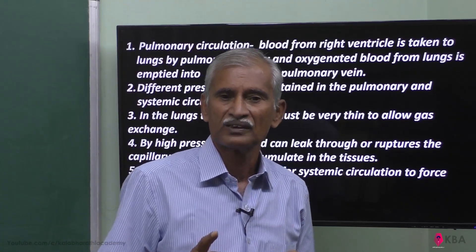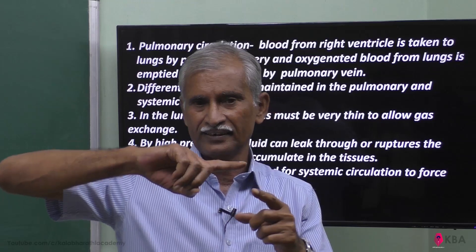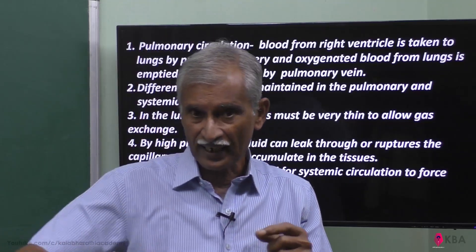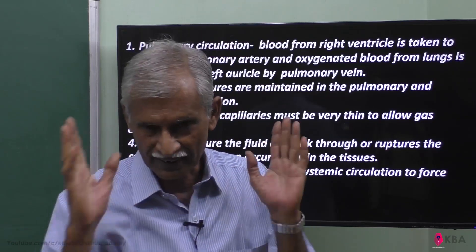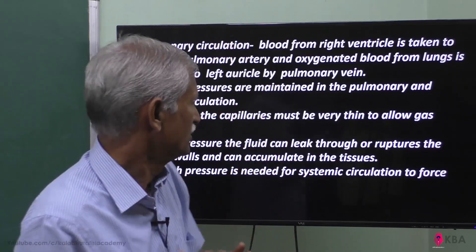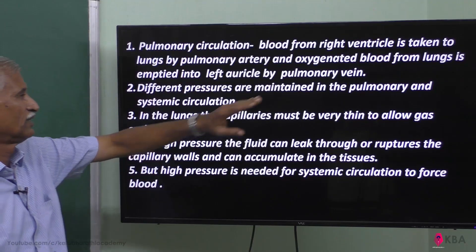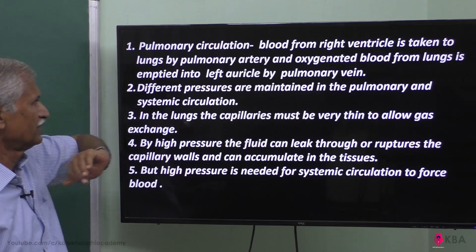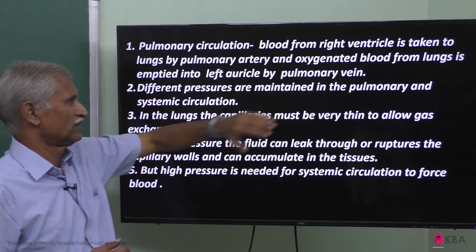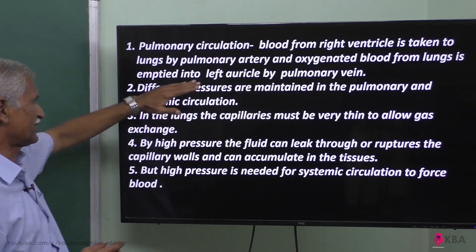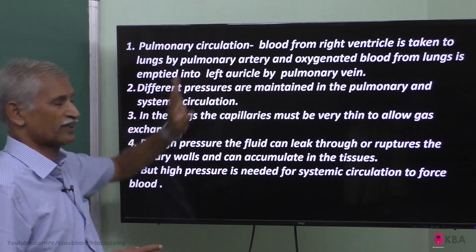To summarize: systemic circulation goes from the left ventricle and returns to the right auricle. Pulmonary circulation goes from the right ventricle, taken to the lungs by the pulmonary artery, and oxygenated blood from the lungs is taken back to the left auricle by the pulmonary vein. Different pressures are maintained in each circulation.